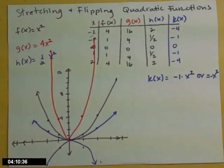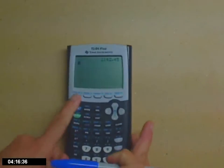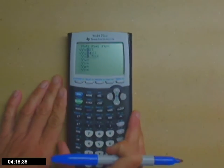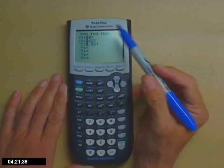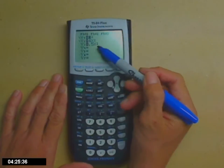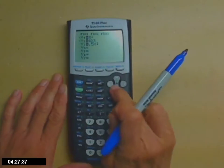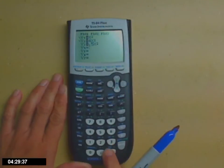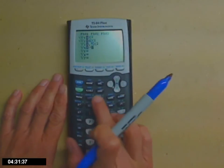So I want to show you very quickly here on my calculator how that all works. So if we look at what I have input, I have y₁ = x², y₂ = 4x², and y₃ = 0.5x². I'll go ahead and put in a y₄ here of -x². And now I'm going to change my window so that I can see all of that better.